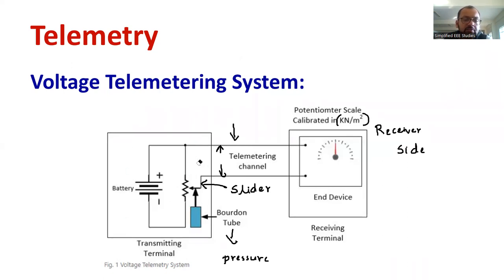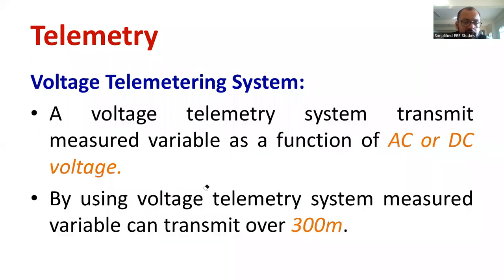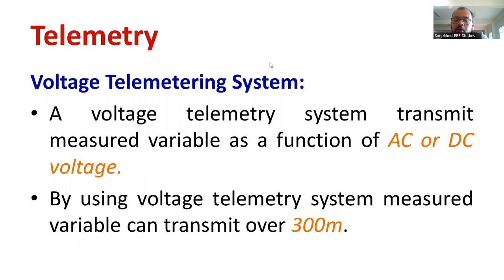For your better understanding, I have made a PPT. Let me show you what I have written. As you can observe the slide, I have mentioned the details of the voltage telemetry system. It can be used as AC or DC voltage — there is no issue. The distance is restricted up to 300 meters. If you want to go beyond 300 meters, you need to use a different type of system other than landline telemetry.